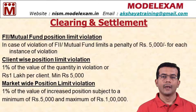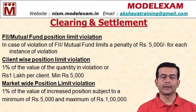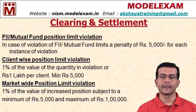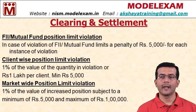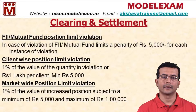The second one is client-wise position limit violation. If any trader exceeds his limit, then one percentage of the value of the quantity in violation is applicable. Suppose he is to take only one crore worth of shares in derivatives but he takes two crores, then there is an excess of one crore — that is the quantity in violation. So one percentage of the value of the quantity in violation, or one lakh per client, is applicable, and the minimum penalty will be five thousand rupees.